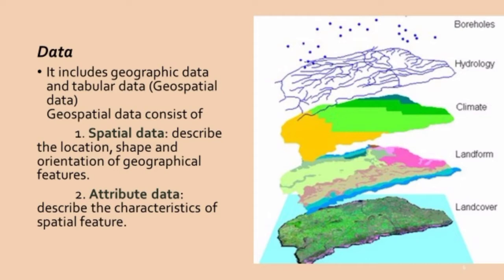Spatial data is the description of the location, shape and orientation of geographic features. For example, in an image the base map represents spatial data. If you are considering your city, your city map will be the spatial data. You have to make a digitized version of your city map, and that is the spatial data on which all the attribute data will be layered.